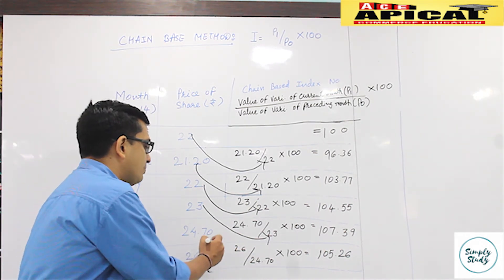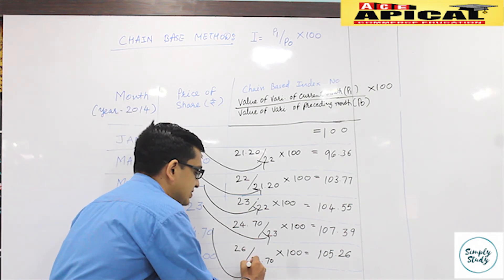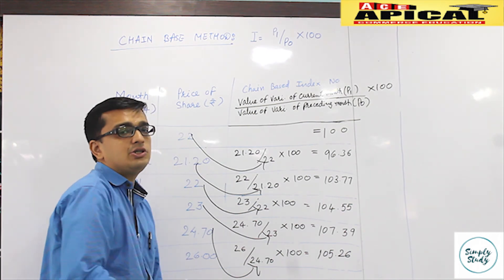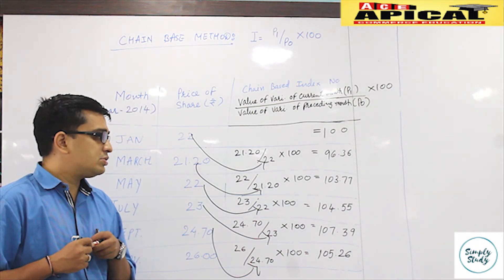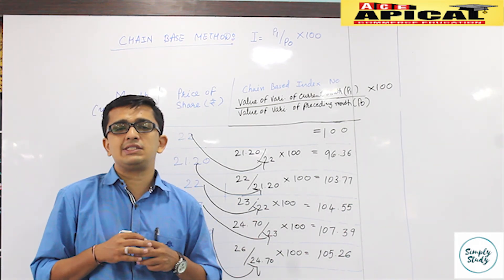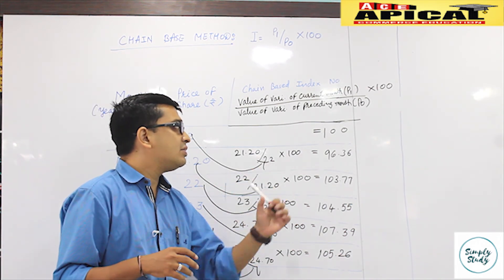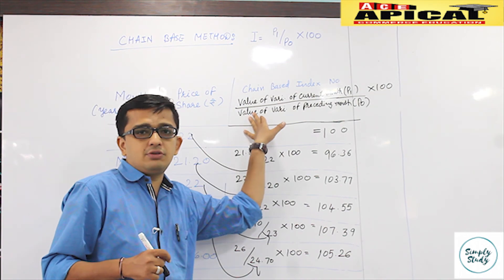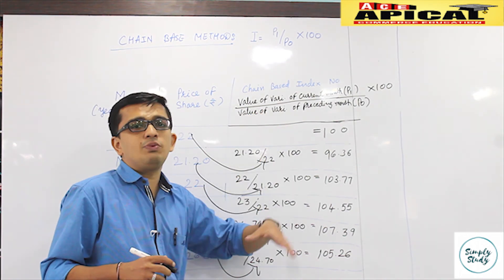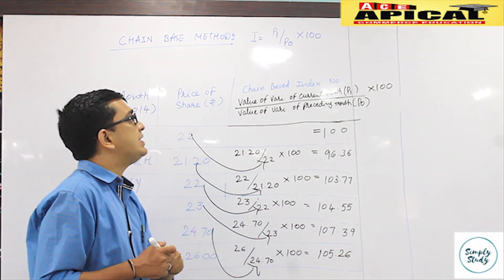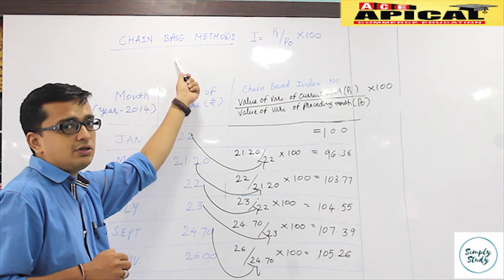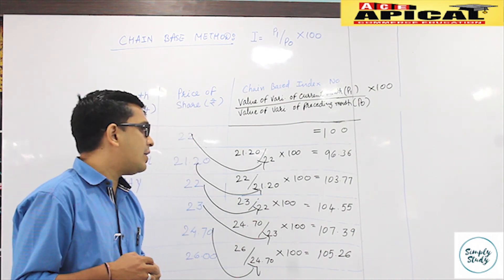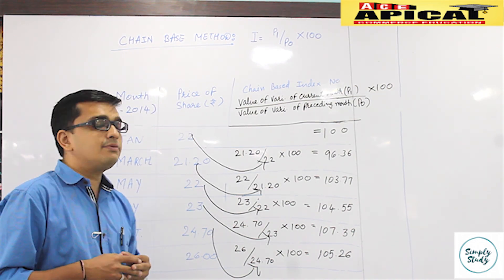Finally, for the month of November: p1 (current month) = 26, p0 (preceding month, September) = 24.7, so (26 / 24.7) × 100 = 105.26. This example clearly demonstrates that the preceding month becomes the base year and it keeps changing — that is why it is known as the chain base method. If you have any queries or doubts, feel free to reach out. Thank you.